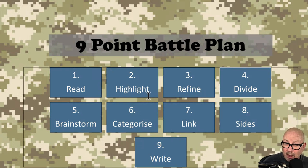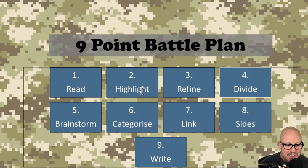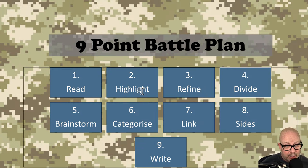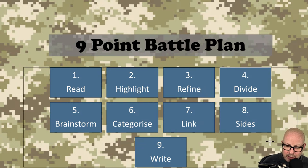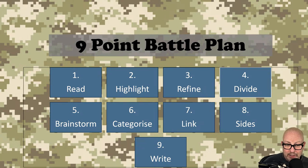Here's the battle plan — in DPM, disruptive pattern material. Nine steps: read, highlight, refine, divide, brainstorm, categorise, link, sides and write. These are simply a list of ideas you can have in your head. The first one isn't rocket science: read the question. Then highlight, refine, divide, brainstorm, categorise, link, sides and write. That's my checklist — if you go through your essay making sure you're covering all of those, you'll be in really good shape.